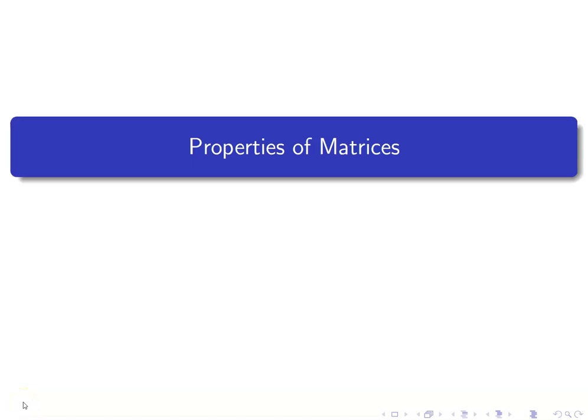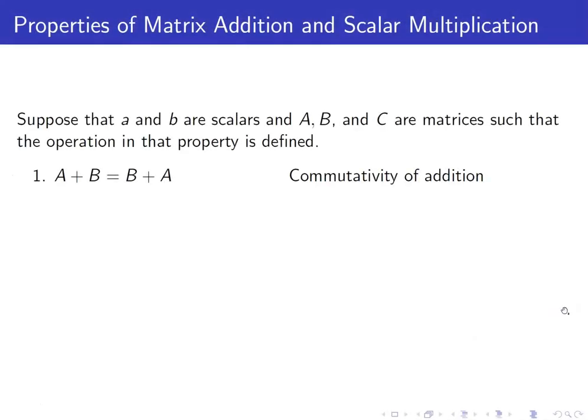In this section, we will discuss some of the algebraic properties of matrix operations. We will see that many of the basic rules of arithmetic for real numbers hold for matrices, but we will also see that some do not. Here are some of the algebraic properties of matrix operations that are also true for real numbers.